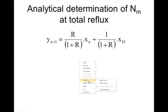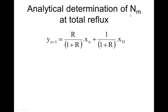Today we are going to find out the minimum number of transfer units, or the minimum number of trays, that should be there in a distillation column using an analytical method. We are going to use the analytical method to determine the minimum number of transfer units, and this will occur when we are experiencing total reflux.